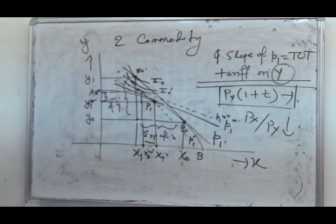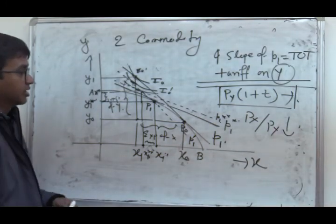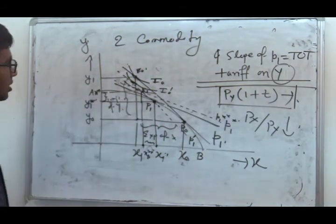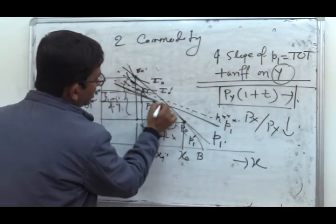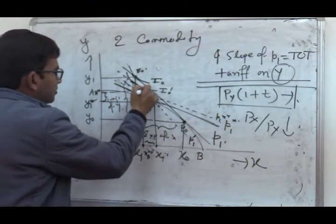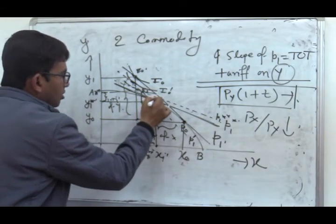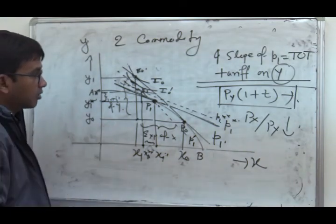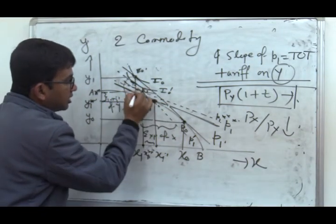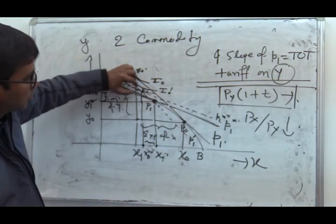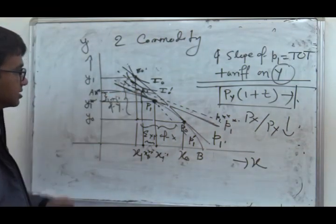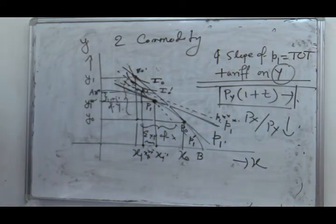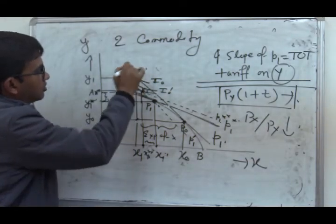Regarding the price effect and revenue effect: point P1 is on the lower price line, which indicates the value of domestic production at factor cost. E1 is on the higher price line, indicating the domestic value of production at market prices. The difference between market prices and factor cost indicates the tariff revenue of the government.